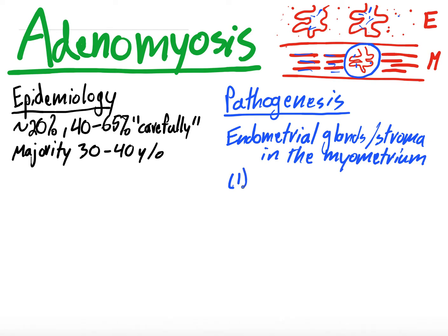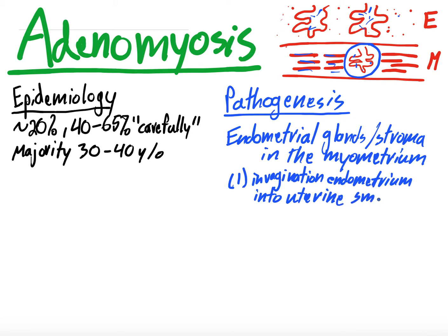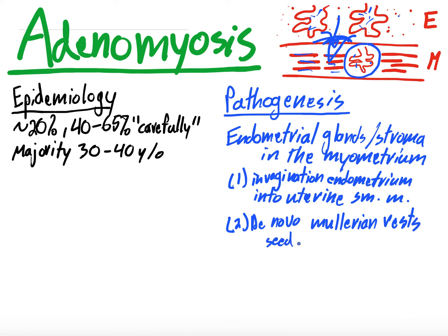Why does it happen? There are two proposed mechanisms. The first is invagination of the endometrium into the uterine smooth muscle — the endometrial tissue comes down and invaginates into the myometrium, which then heals over, trapping endometrial glands and stroma inside. The second theory is a de novo embryologic explanation: Mullerian rests during development seed the myometrium with endometrial tissue, which grows there as you age.